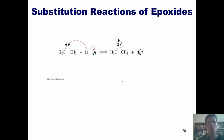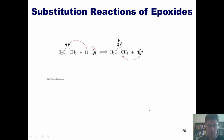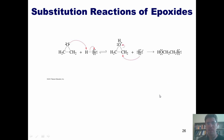At this point, the bromide can attack one of those two carbons — it doesn't matter which one — pushing these electrons into this oxygen to neutralize its charge, and giving a product in which I have both a Br and an OH attached to this ethane linker.